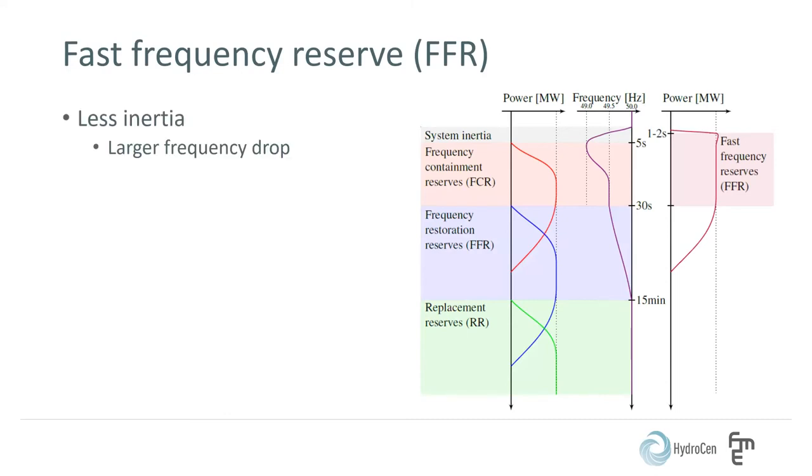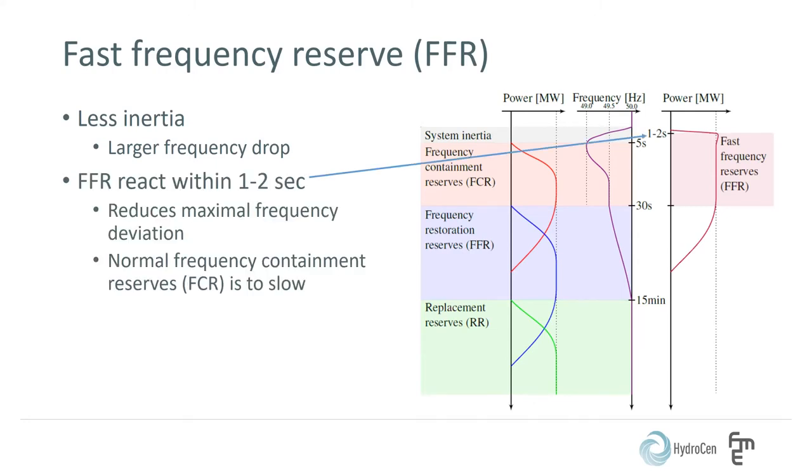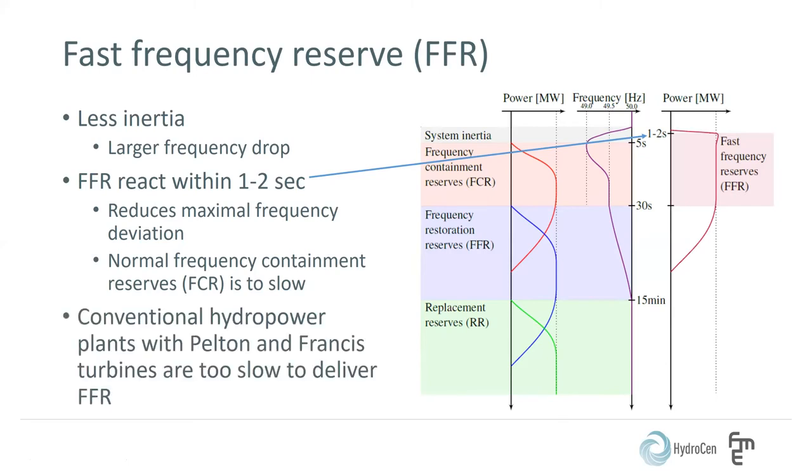As mentioned, the future grid with less inertia will experience larger frequency drops. Fast frequency reserves, FFR, are suggested as new auxiliary services. By reacting within one to two seconds, the FFR will reduce the maximum frequency deviation. In comparison, frequency containment reserves, FCR, are activated after the frequency has reached its maximum deviation approximately five seconds after the disturbance. And thereby, it is too slow. Also, the power response from conventional hydropower plants with pelton and Francis turbines are too slow to deliver FFR.